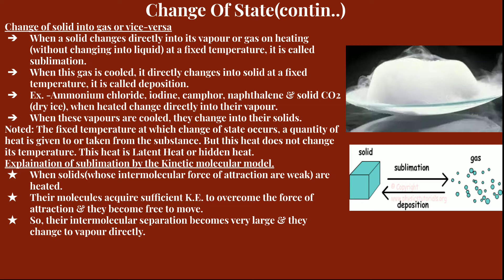When a solid changes directly into vapor or gaseous state on heating, without changing into liquid, at a fixed temperature, that is known as sublimation. When the gas is cooled and changes directly back into solid without becoming liquid, that is known as deposition. Examples of substances that undergo sublimation are ammonium chloride, iodine, camphor, naphthalene, and solid carbon dioxide, which we call dry ice.